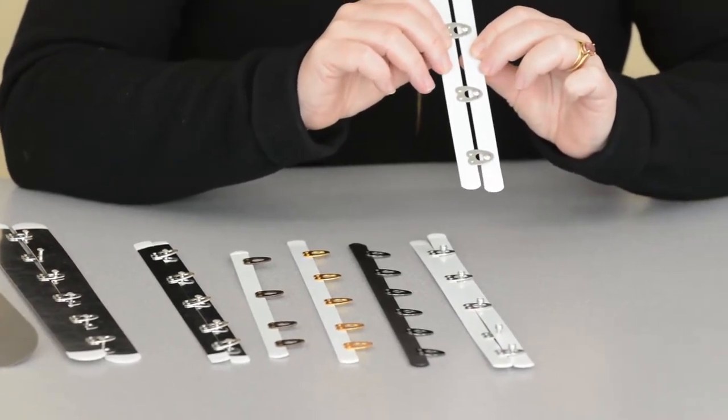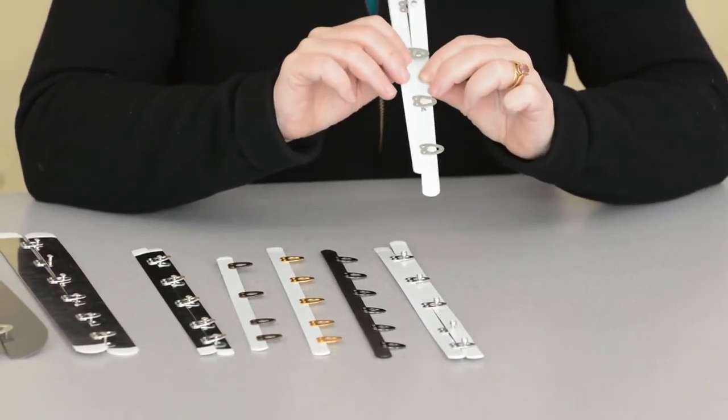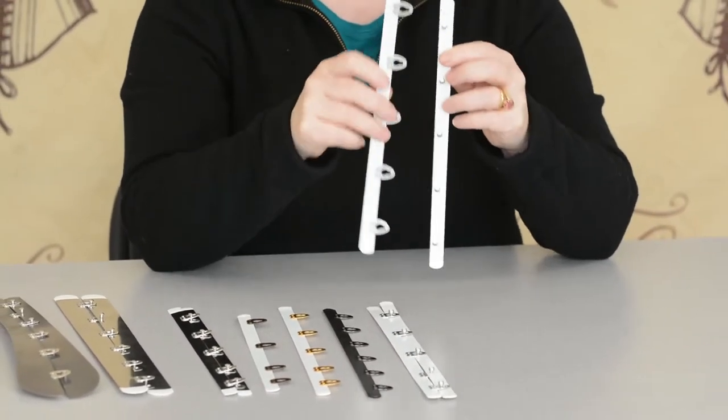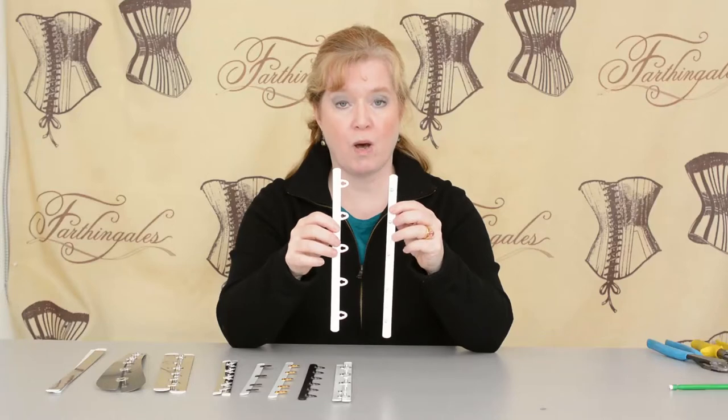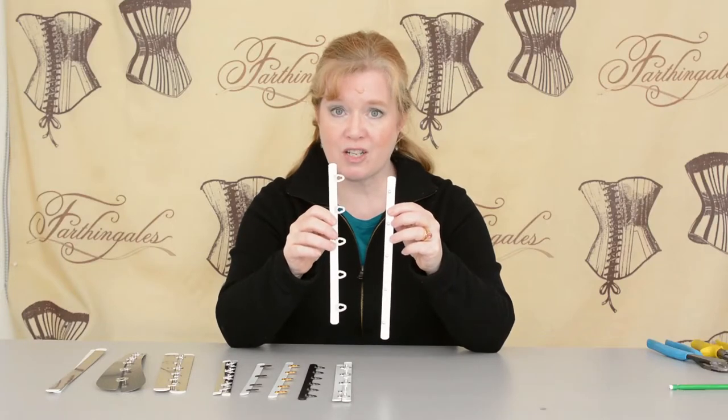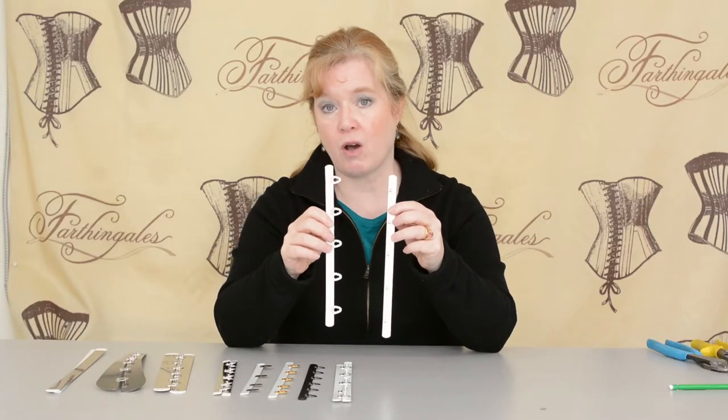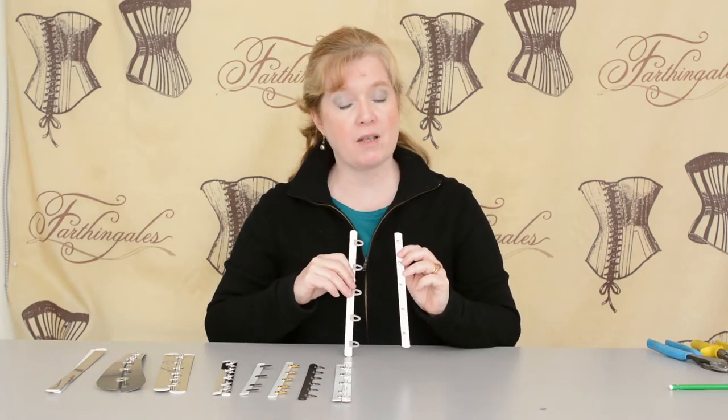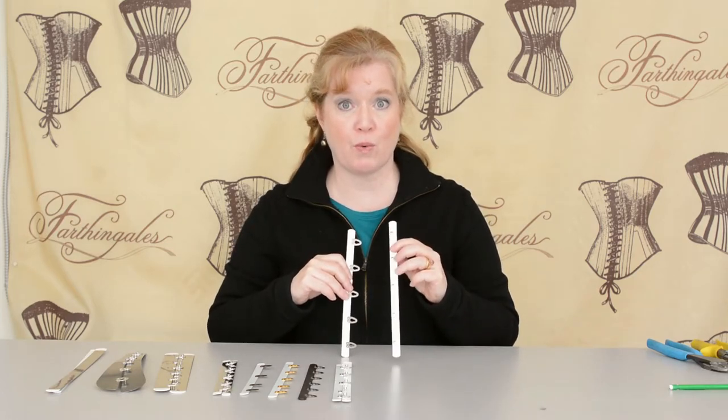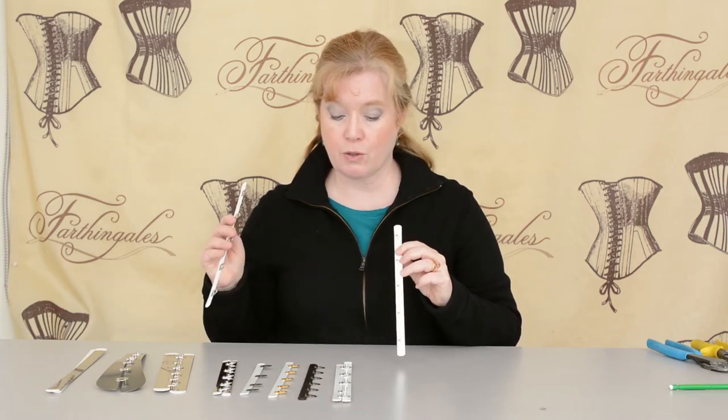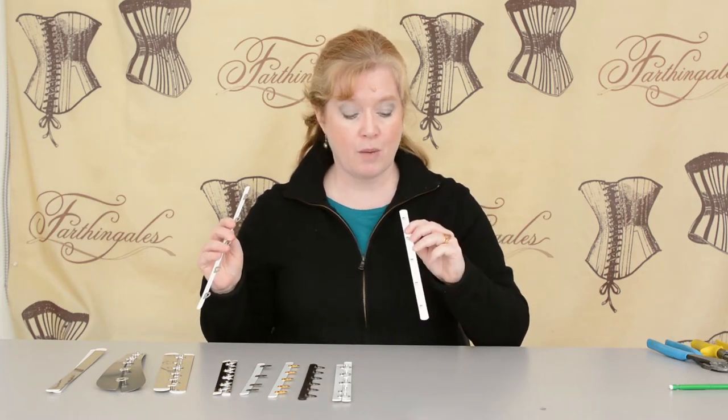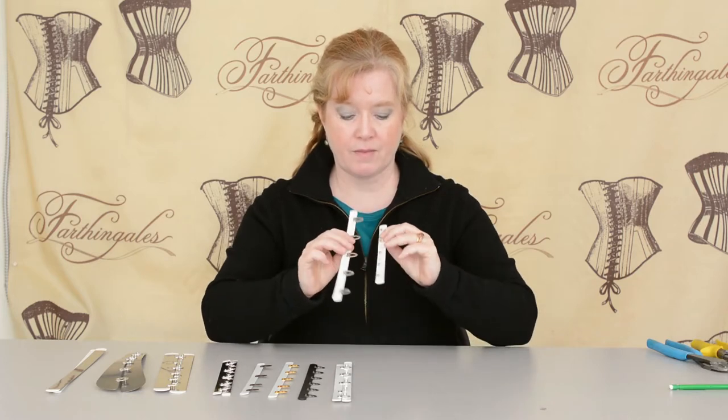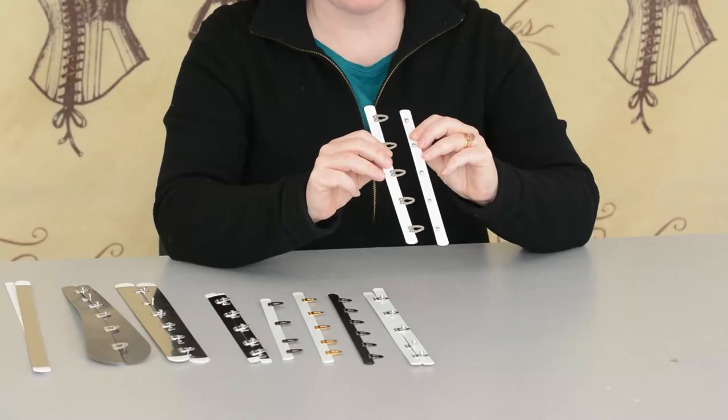This is a basic corset busk. There's two sides - one has loops, one has knobs. The important thing to know is that the loops always go in the right-hand side of the corset, on the right-hand side of the body of the person wearing it. Knobs go on the left-hand side, and one goes over the other. That's a basic opening busk.